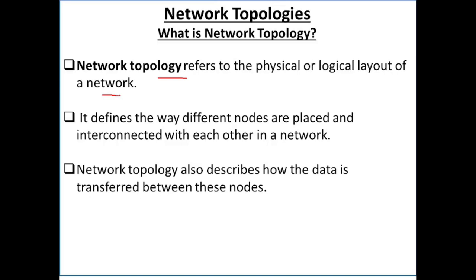Network topology mein kisi bhi network ki logical layout ko bhi define kiya jata hai. Means ek network ke andar data ek device se dusre device pe kaisi jayega, matlab kaisi transmit kiya jayega. It defines the way different nodes are placed and interconnected with each other in a network. Network topology batata hai ki ek network mein nodes ko, computers ko, devices ko kaisi place kiya jayega, kaha unko attach kiya jayega, aur kaisi unko ek dusre se interconnect kiya jayega.